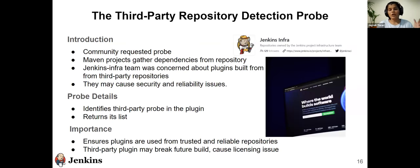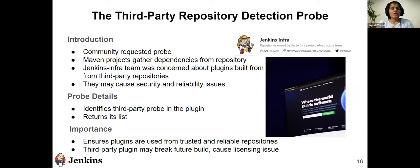The second probe — Third-party Repository Detection — is exciting because it's community-requested. The Jenkins Infra team often gets requests from plugin maintainers when builds fail due to third-party repositories. Maven collects dependencies from different repositories, and it's important that these repositories are reliable and secure. We have a default Jenkins repository, but dependencies may come from other sources. This probe gives users awareness that third-party plugins could break future builds or cause licensing and security issues.